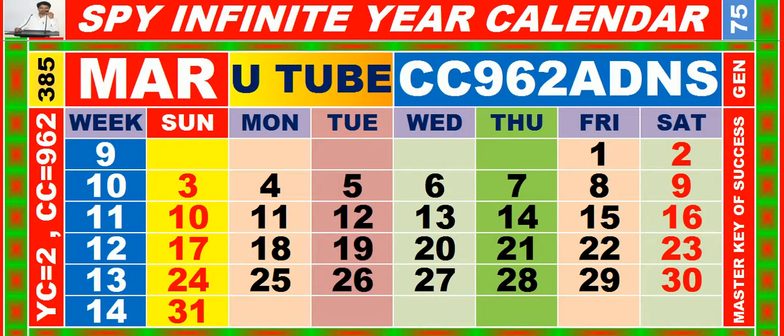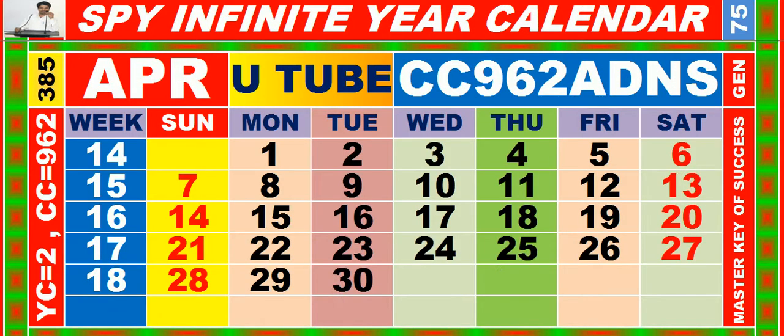Calendar for the month of March, having calendar code equal to 962. Calendar for the month of April, having calendar code equal to 962.